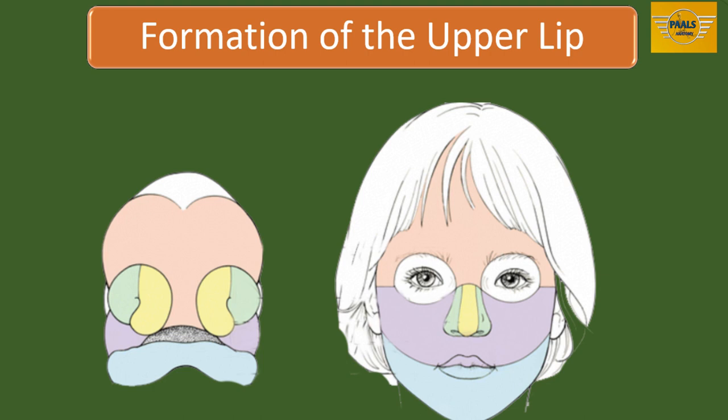The muscles of the face, including those of the lips, are derived from the mesoderm of the second pharyngeal arch, and are therefore supplied by the facial nerve. The facial nerve is the nerve of the second pharyngeal arch, which explains how the second pharyngeal arch contributes to the formation of the face.